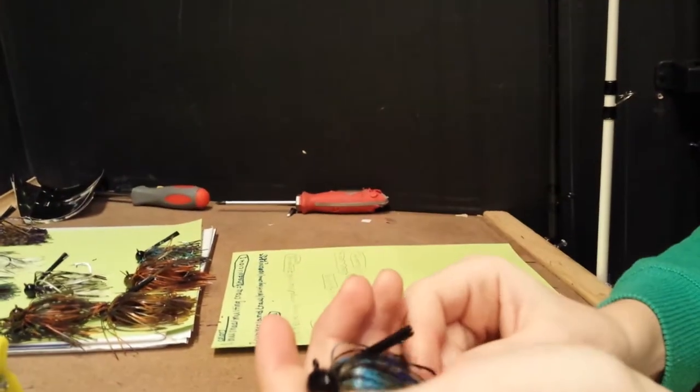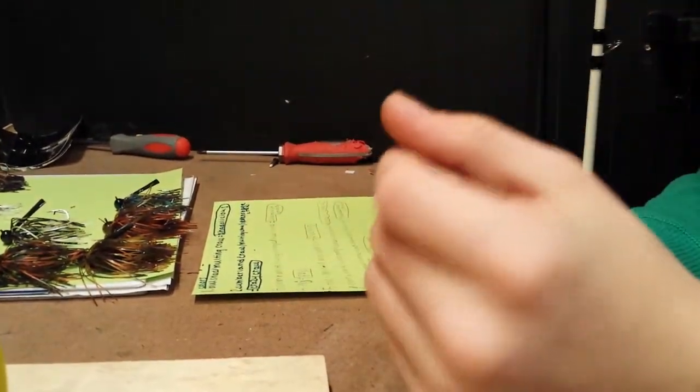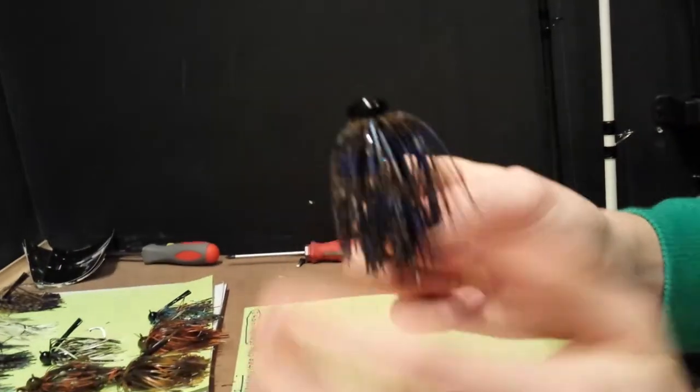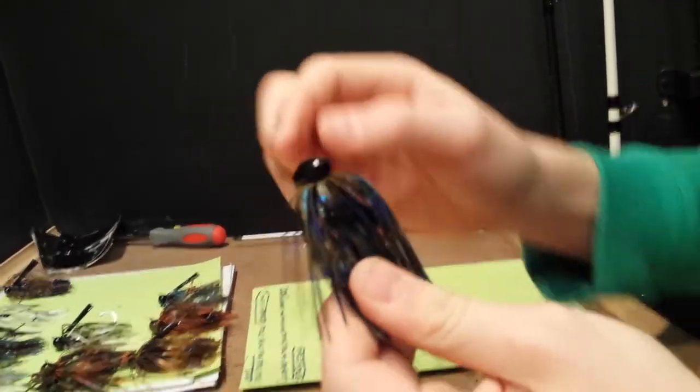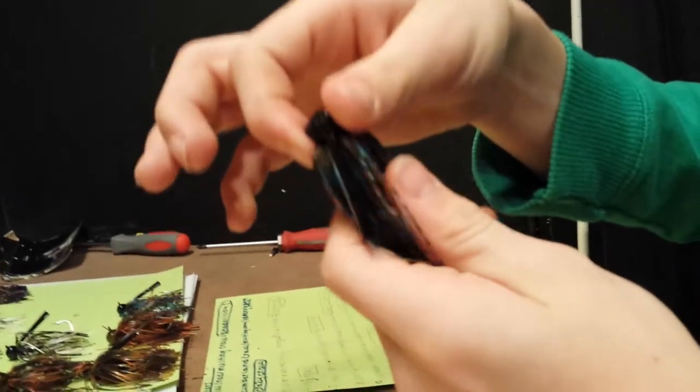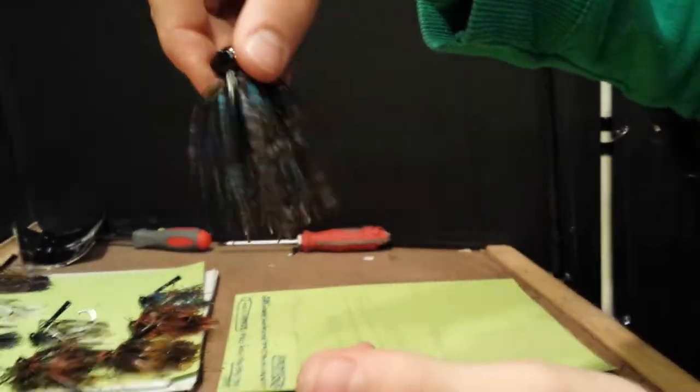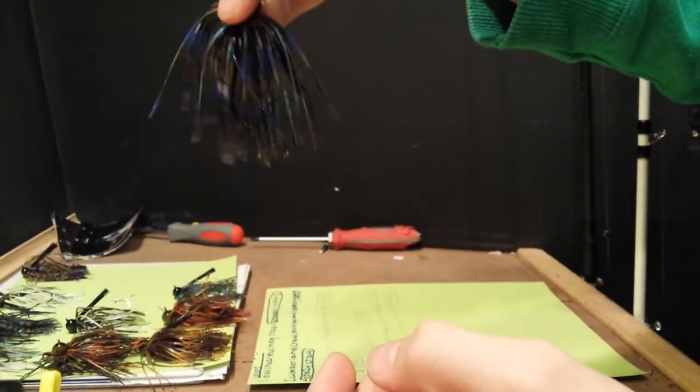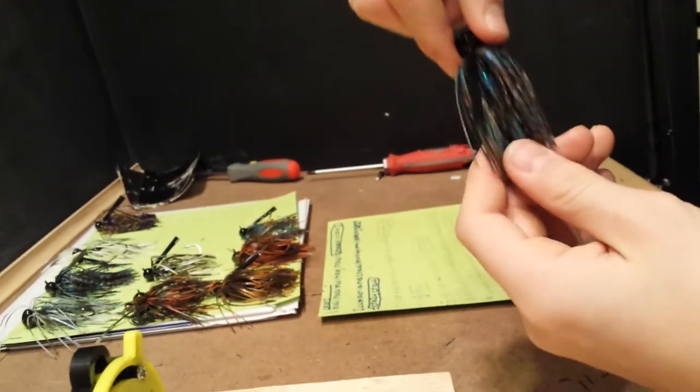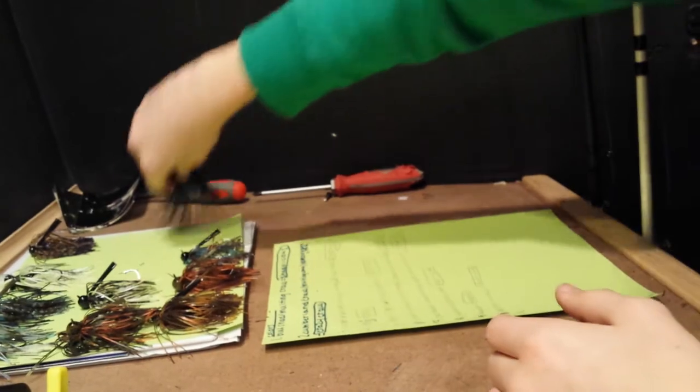One of my favorites actually. It's like a black and blue, but I called it blueberry jam. I added Okeechobee Craw and every single blue color I had to make that blueberry jam. The skirt is very good. I cut them just a little short. That right there is a perfect size for a jig, in my opinion.